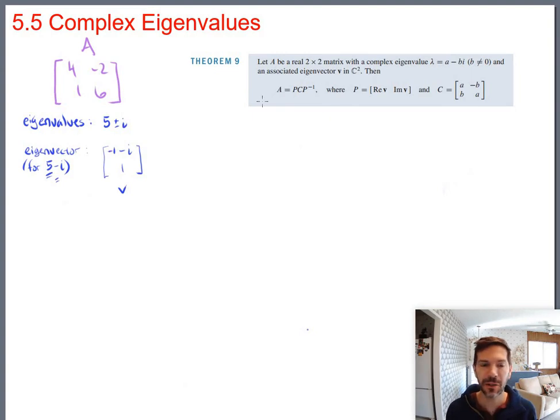It claims that then you should be able to break A down into a P times a C times a P inverse, where C has this format that we've already talked about. So it basically says you can break down any 2x2 matrix, even one with complex eigenvalues, into something times a rotation and scaling times something else. And they tell you how to build this something else too. They say P is made, its columns are made out of the real part of the eigenvector and the imaginary part of the eigenvector.